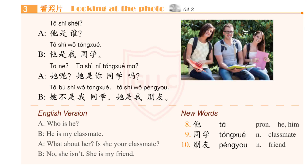Text 3 — 她是谁? 她是我同学。她呢? 她是你同学吗? 她不是我同学，她是我朋友。 New words: 同学、朋友。